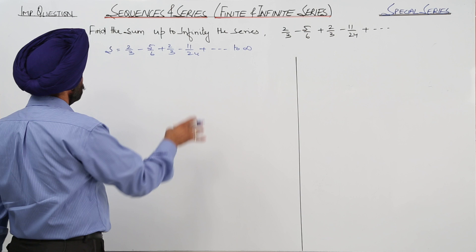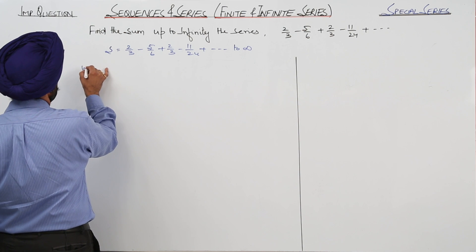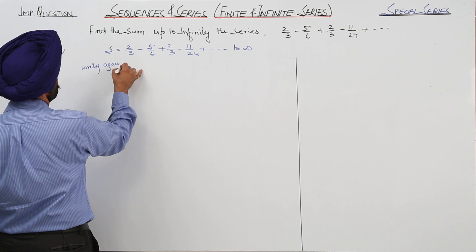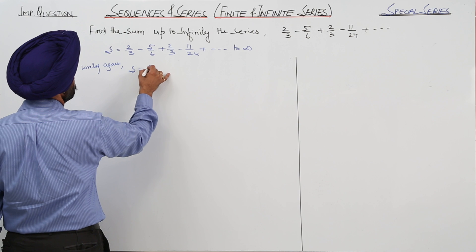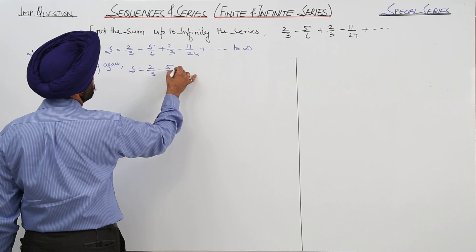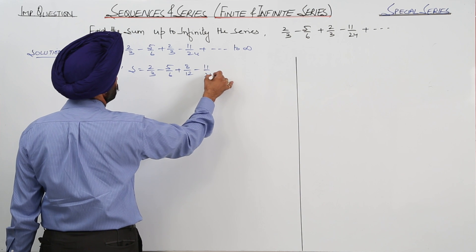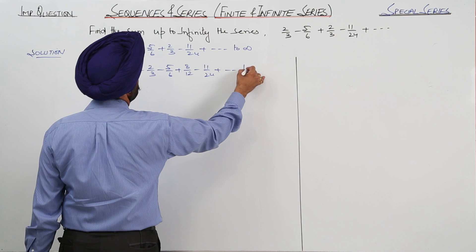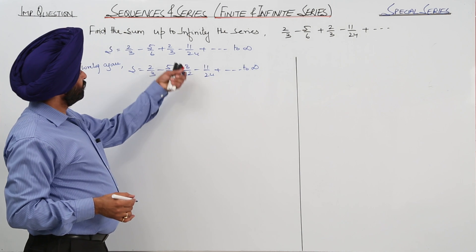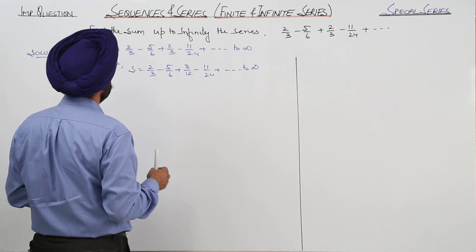Now can I write? Writing again, just look at what I am doing. S is equal to 2 by 3 minus 5 by 6 plus 8 by 12 minus 11 by 24 to infinity. Now 8 by 12 and 2 by 3 is one and the same thing. So what we are getting now?